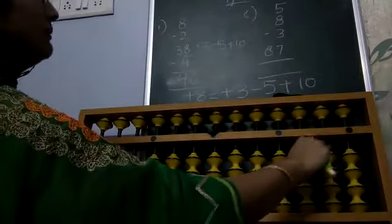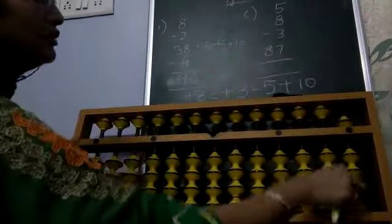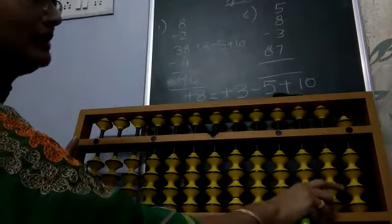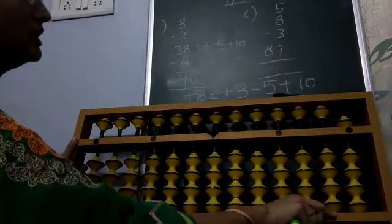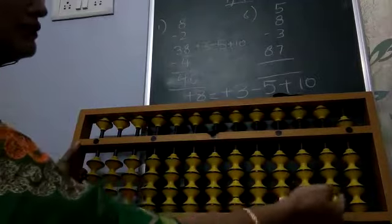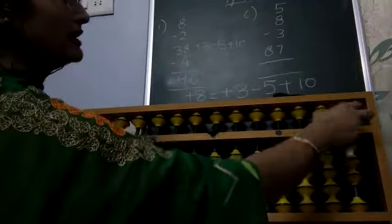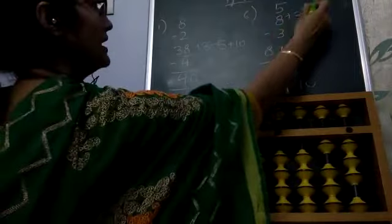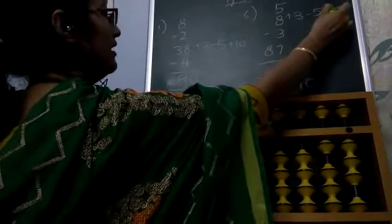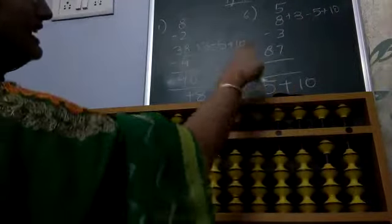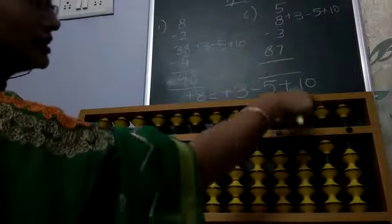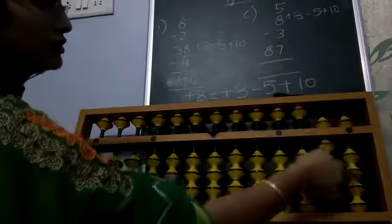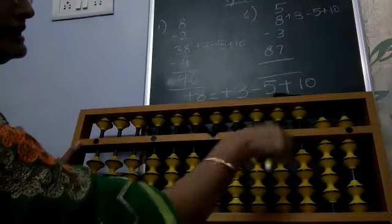Next question: plus 5, then plus 8 — not possible directly. Big friend formula requires minus 2 which is not possible, so we apply the combination formula: plus 3 minus 5 plus 10. After that, minus 3 is possible. Then 87 — 80 is possible and 7 is also possible directly. The answer is 97.